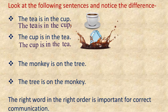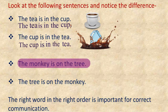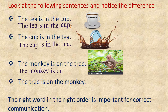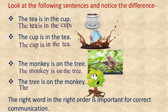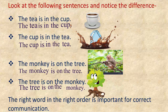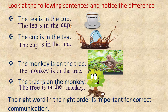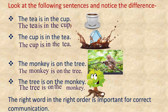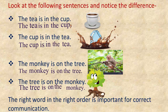Now look at the other two sentences and repeat after me: 'The monkey is on the tree.' 'The tree is on the monkey.' The first sentence is correct, but when we say 'the tree is on the monkey,' the listener may get confused and think how can the tree be on the monkey. What I want you to notice is that the selection of words and their placement in the sentence is very important to convey the right meaning.